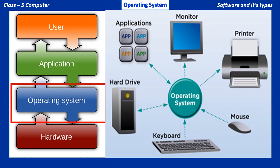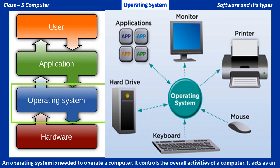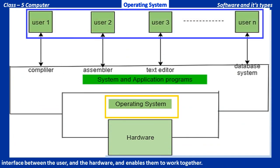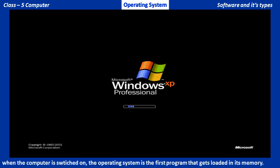An operating system is needed to operate a computer. It controls the overall activities of a computer. It acts as an interface between the user and the hardware and enables them to work together. When the computer is switched on, the operating system is the first program that gets loaded in its memory.